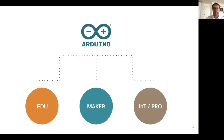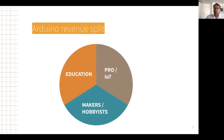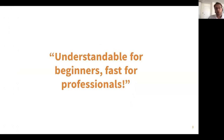This user group splits into three quite nicely, and Arduino has segmented its product range accordingly. In terms of revenue split, professional users account for around 30%, which sometimes surprises people. Because our tools are easy to use, they're also fast to use by professionals — and often those professionals will not necessarily be in embedded electronics specifically.